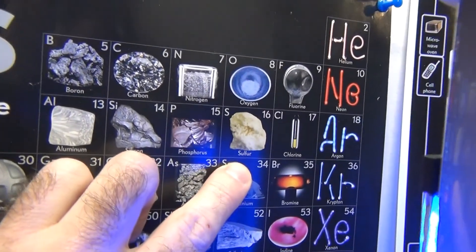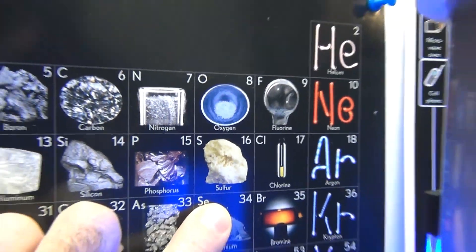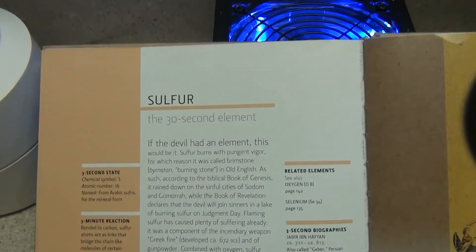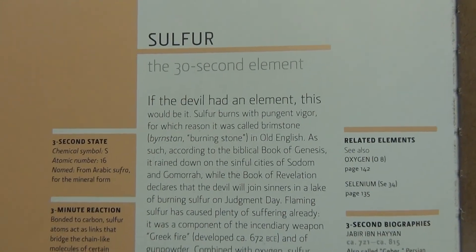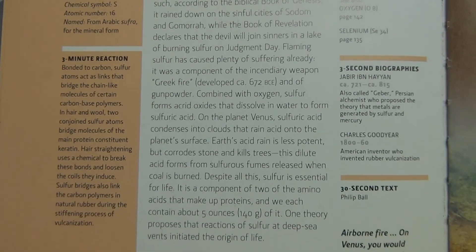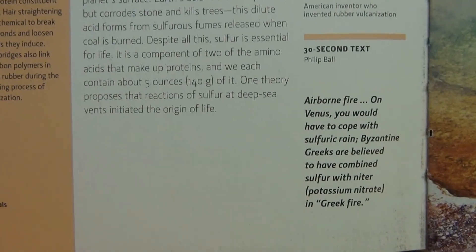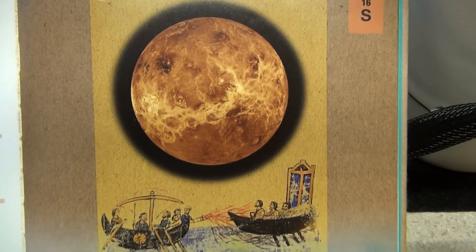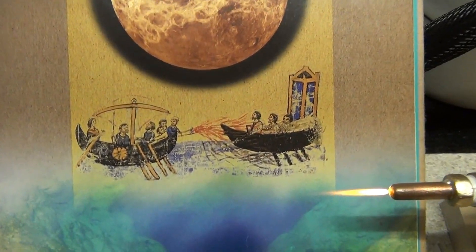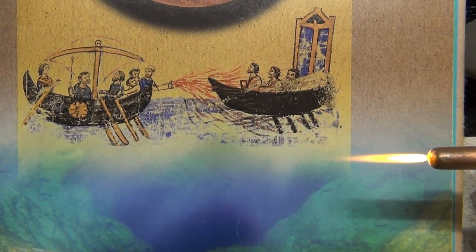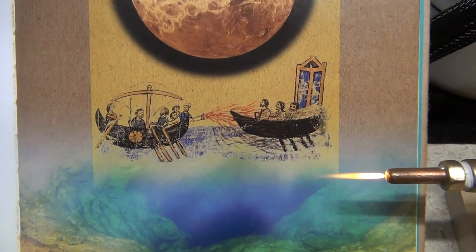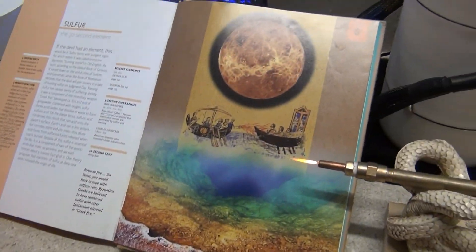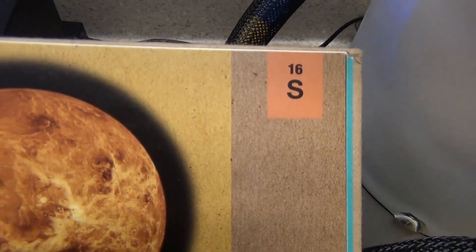Here's another great element. This is sulfur, number 16 on the table of elements. And this is related to calcium oxide and limestone. You have to go back and read this. It was a component in Greek fire. They used sulfur, calcium oxide, and potassium nitrate. So it was used in ancient Greek times as a weapon. I thought I'd just throw that in there. Sulfur.